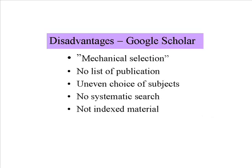Mechanical selection means that contents are chosen by machines. There is no list of publications — that is, no account of which universities or journals you are gathering information from. This also leads to an uneven choice of subjects, which is important for a systematic search and how you can control it.